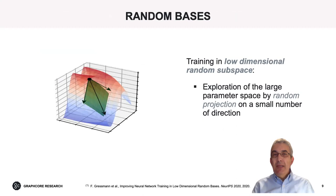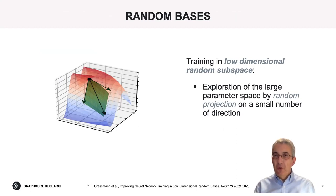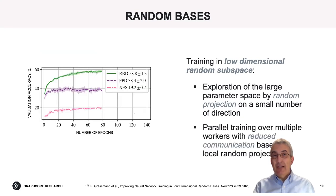Starting with random basis: exploration over the last few years has identified that out of the extremely large parameter space of modern over-parameterized models, only a subset of directions are essential for training. We have tried to improve the performance-speed trade-off by drawing random projections — not only at the beginning of training with a fixed random projection, but by continuing to redraw a new random subset of the parameter space during training. This has been effective in improving the performance of techniques like fixed projection descent or even black-box optimizers based on evolution strategies.